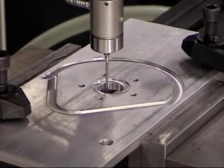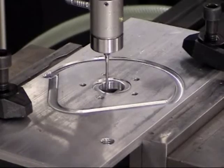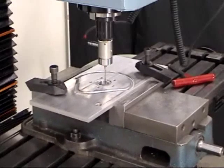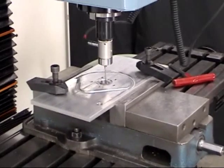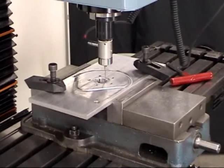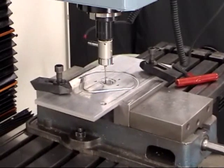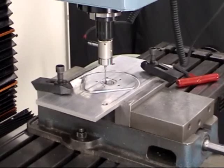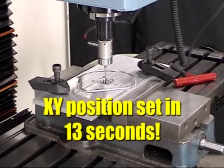The best way to set part zero positions on a centroid is using the optional centroid touch probe. The touch probe will automatically find and set the center points of circular pockets, edges, inside corners, outside corners. It's simply the fastest, best way to set a part zero position.